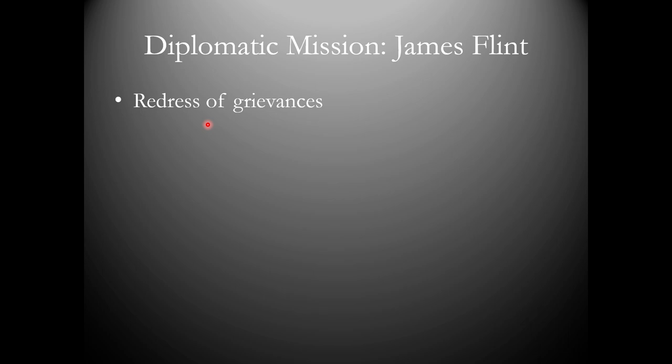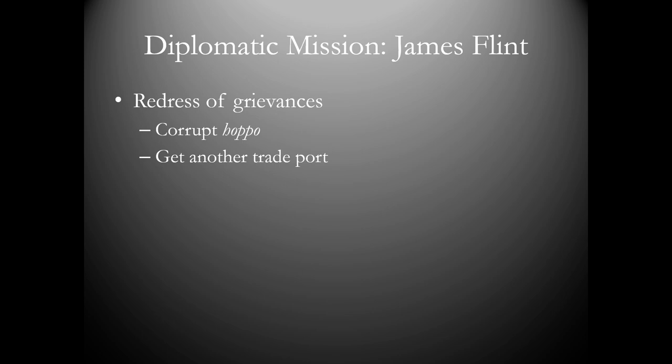This guy is the first Britishman to ever learn Chinese fluently — mostly Cantonese reading and writing and a little bit of Mandarin. Then somebody gets a bright idea to send this man to talk to the emperor about corruption and asking if they can trade in more ports. He does the classic Confucian Chinese move called the redress of grievances, helped by his Chinese teacher to write it — every Chinese citizen has the right to petition the emperor. There's a corrupt hapo, basically the minister of trade for Canton, who's totally corrupt, arbitrarily changing prices and getting quite rich off it. They want another trade port, so they put him on a small ship called Success — sailing in the sailboat age, not steamship age.